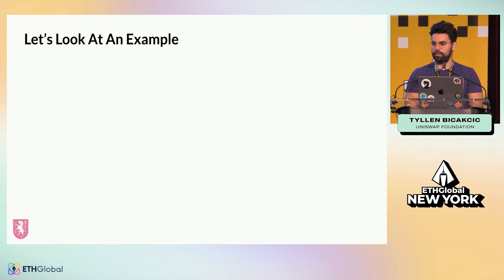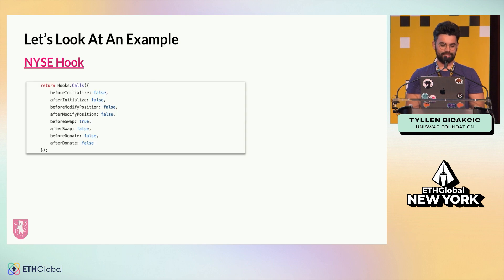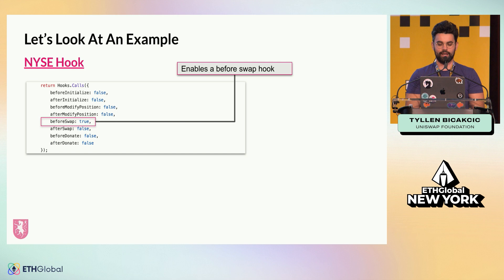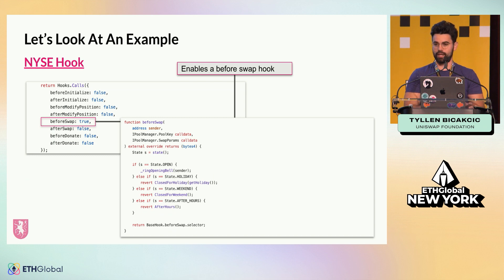Let's take a look at what you can build as an example to understand how hooks perform. We're going to look at a simple New York Stock Exchange hook — what if I want to make Uniswap only open during the hours of the New York Stock Exchange? Before a swap happens, I enable this hook and check that I want to run it. So I call the before-swap hook and set that to true. Then I have my function in my separate hook contract that I add onto the Uniswap pool I've created.